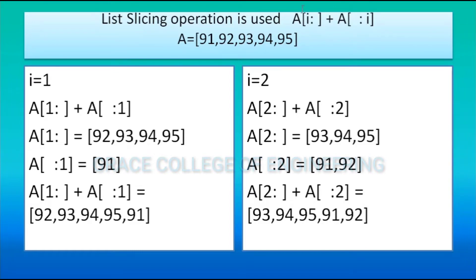For doing the circulation in this program, we are going to use the list slicing operation. The formula is: a[i:] + a[:i]. For list a = [91, 92, 93, 94, 95], when i = 1, we apply: a[1:] + a[:1].